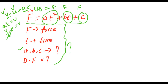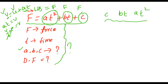Every time you write an equation, every term in the equation represents the same dimension as the physical quantity on the left-hand side. In our case force is on the LHS, and the three terms on the right-hand side — c, bt, and at² — should all represent force. If any term is not force, you can conclude there's something wrong in the equation.